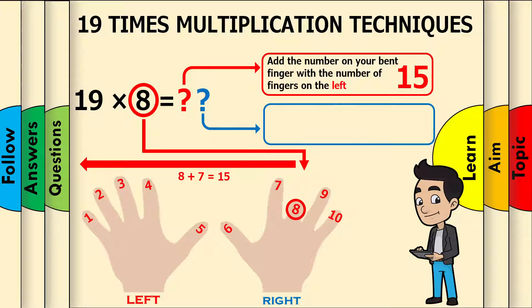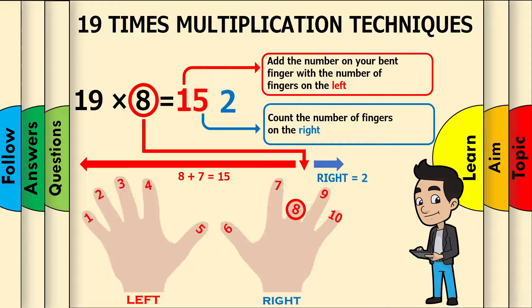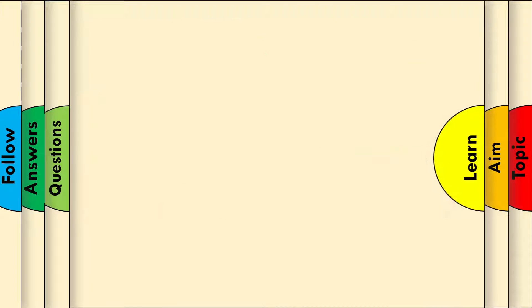Then count the number of fingers on the right. Right equals 2. Finally, replace these two numbers as your answer, which makes 152. This is called the finger count technique.